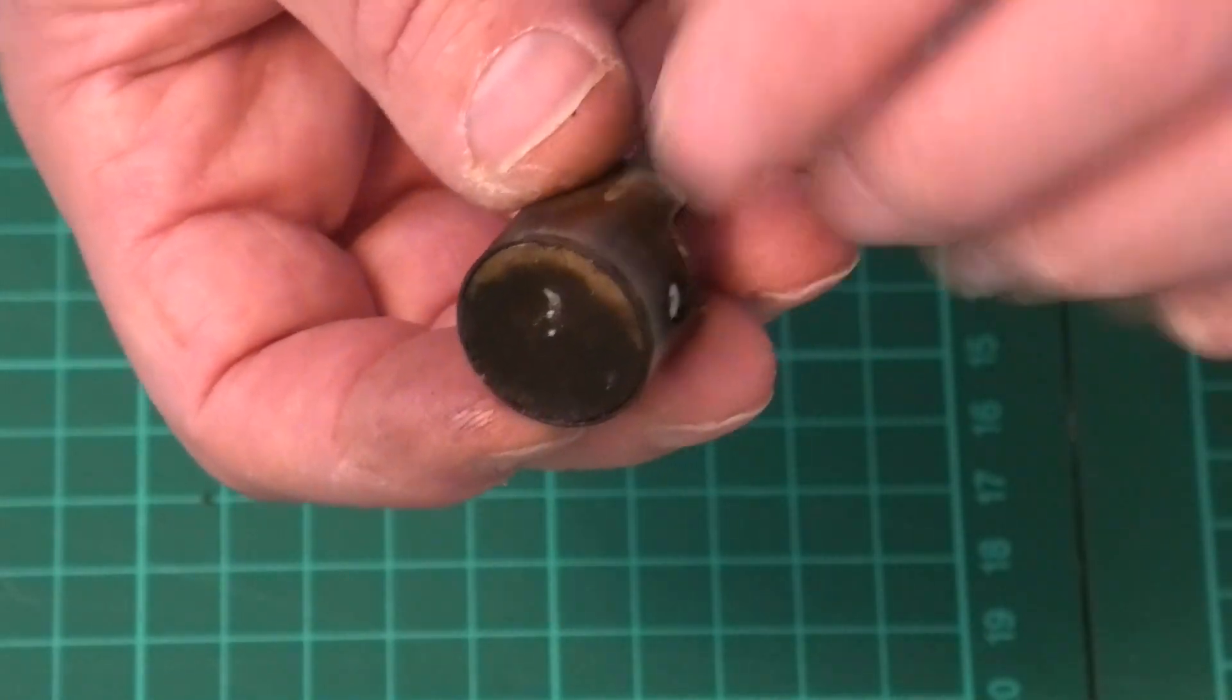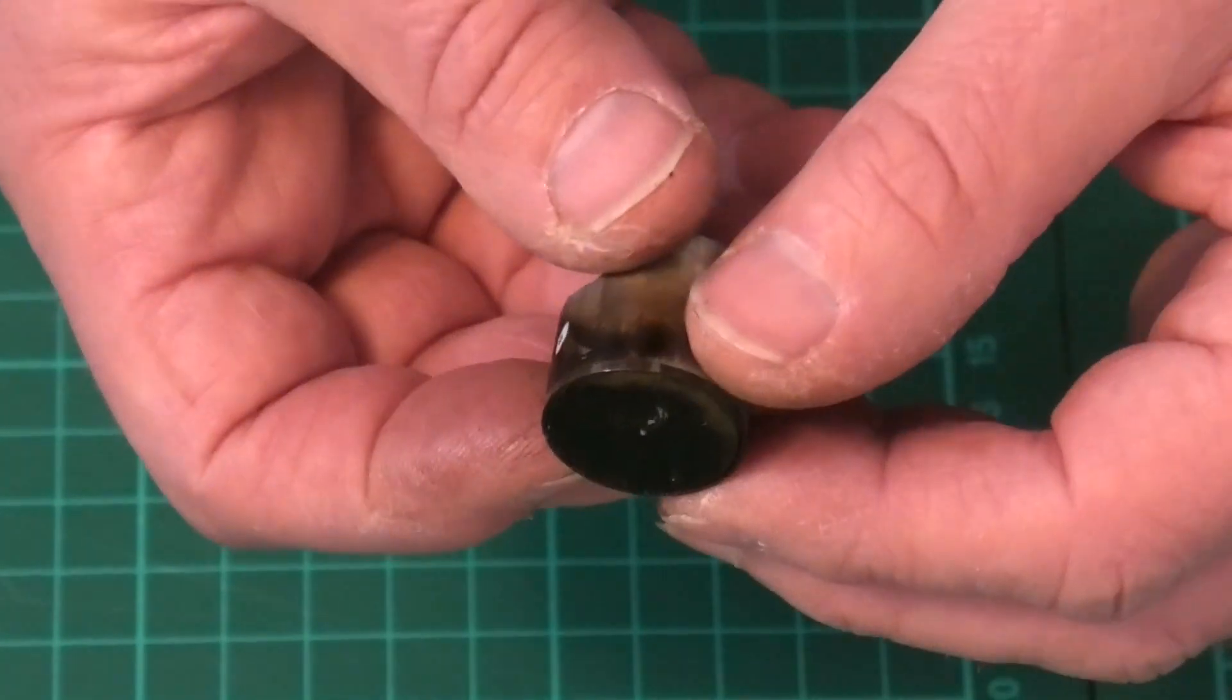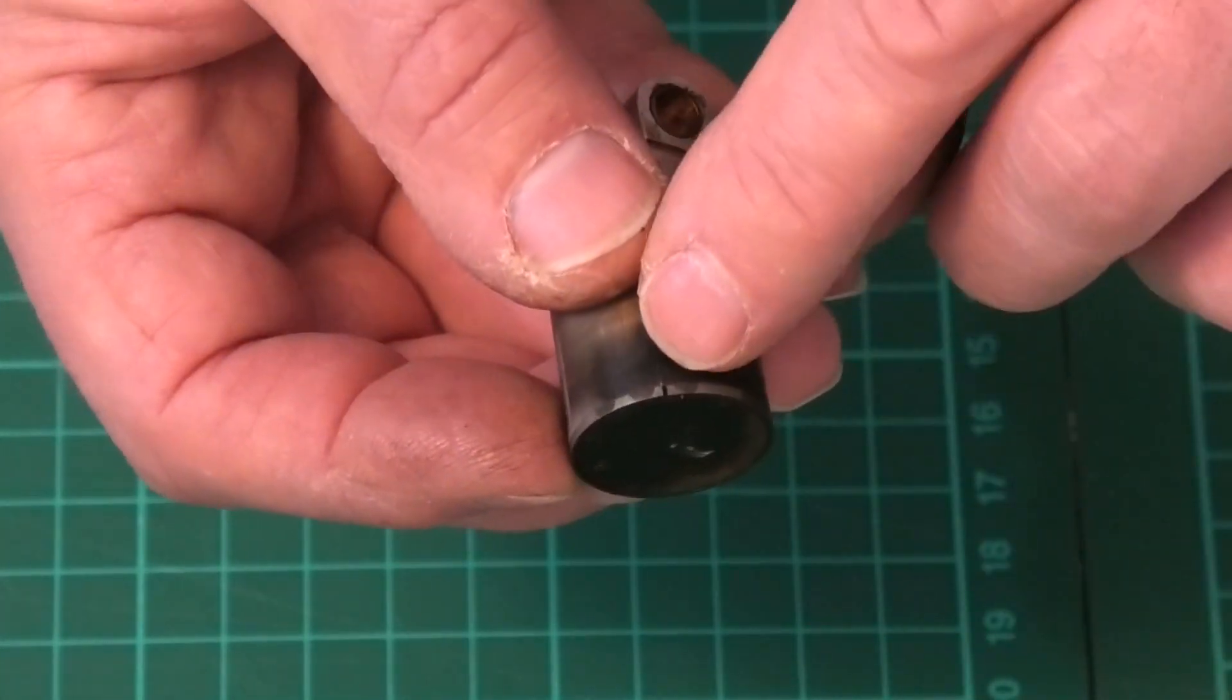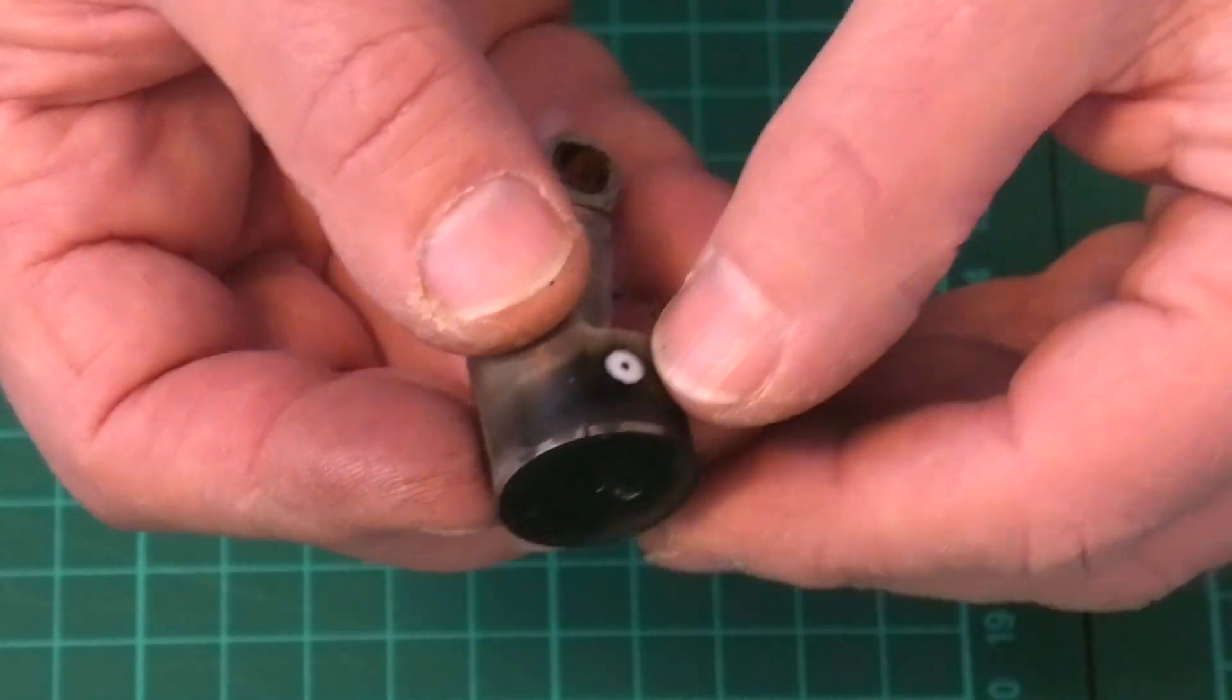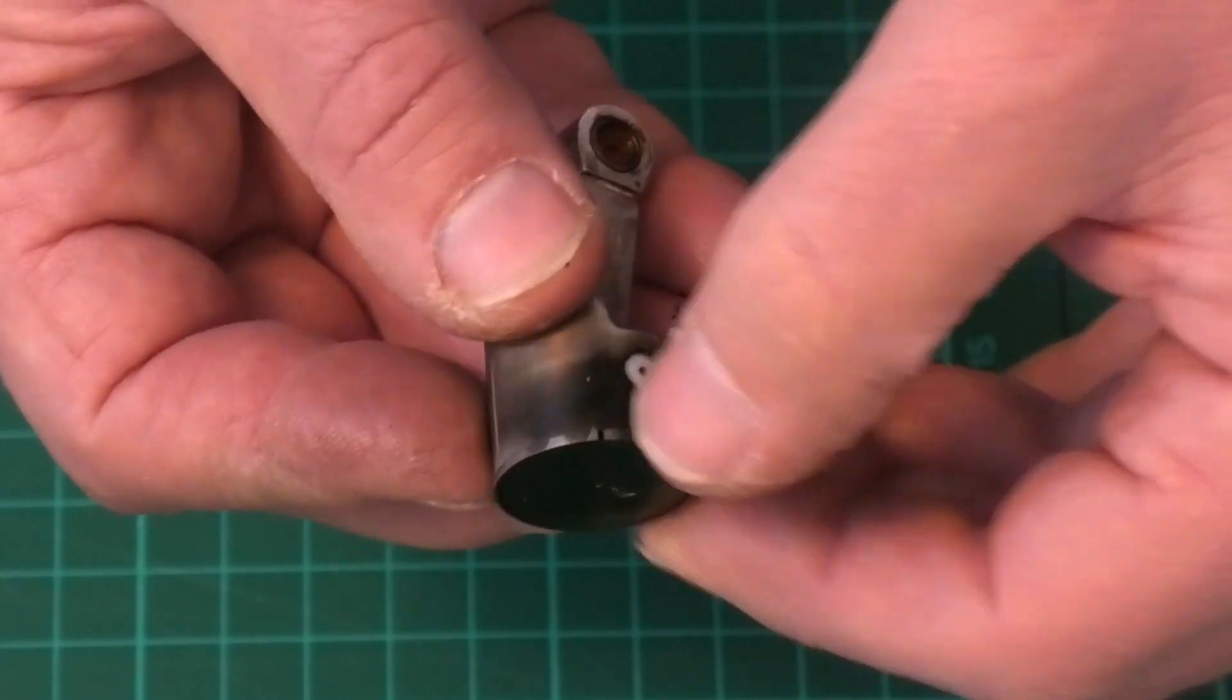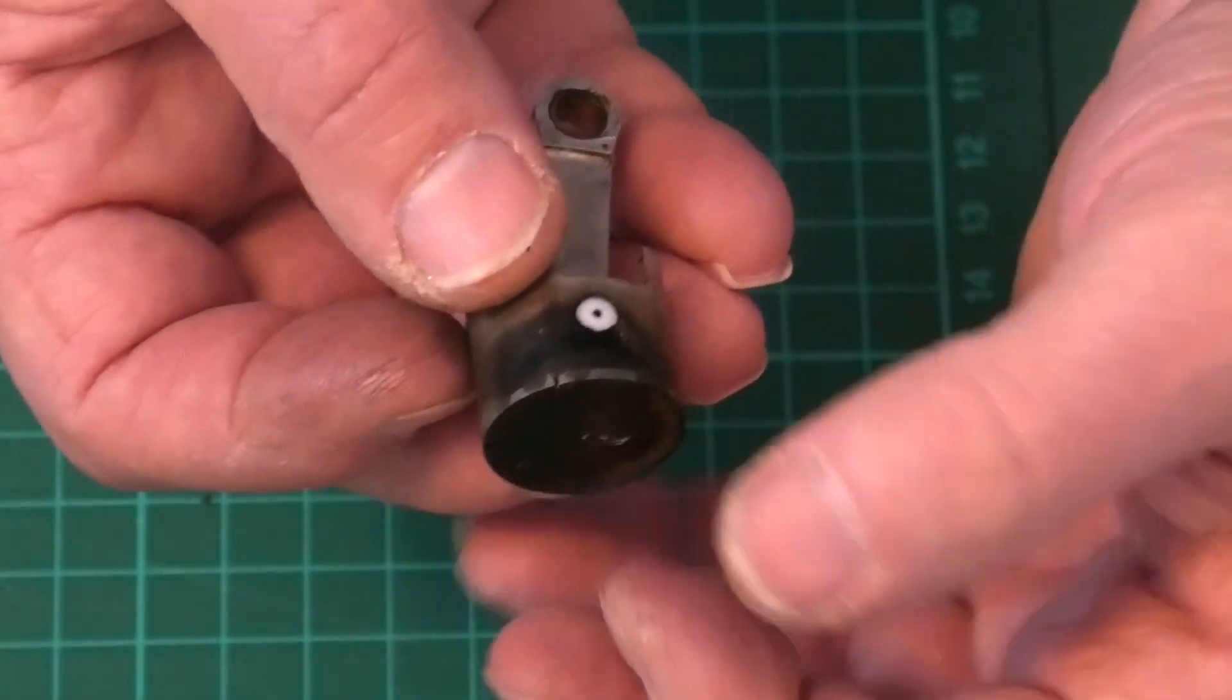These piston rings are L-shaped and they sit in a groove on the top of the piston. You can see just there the gap where the piston ring is - the gap in the ring because it's not a continuous ring.